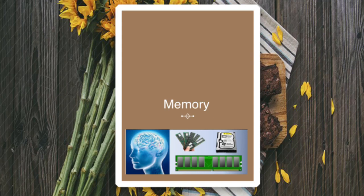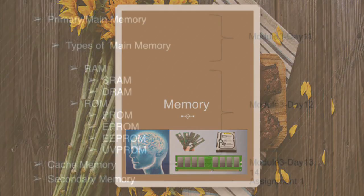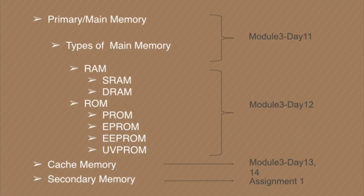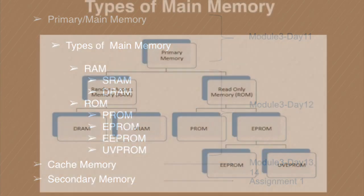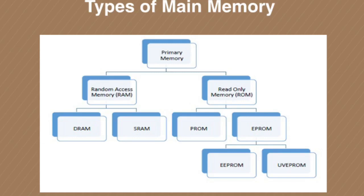Good morning all. Let's continue with our topic: memory. Today we will discuss the different types of primary memory, which include RAM and ROM. We will see the various subsections under these types of memories. Recall this figure: RAM is divided into DRAM and SRAM, that is Dynamic RAM and Static RAM. Read-Only Memory is divided into PROM and EPROM, and EPROM is further divided into WPROM and UV EPROM.